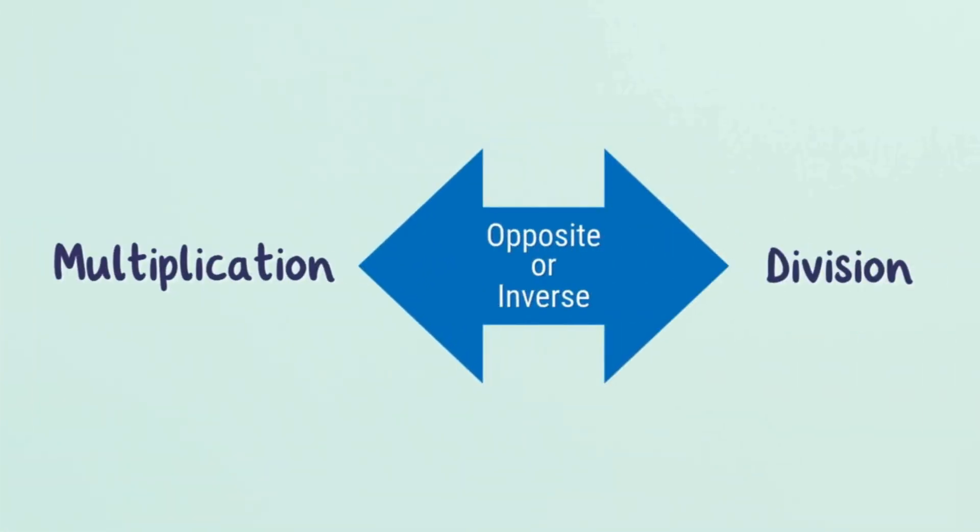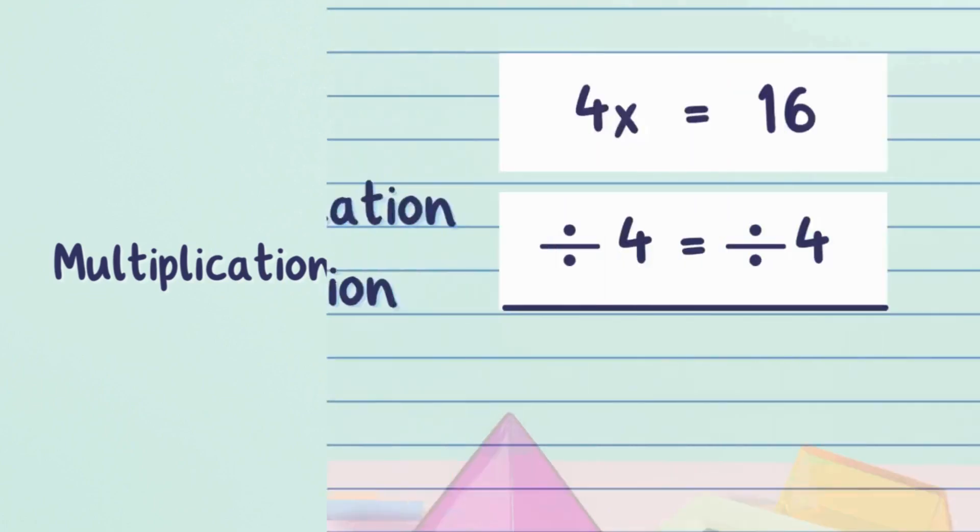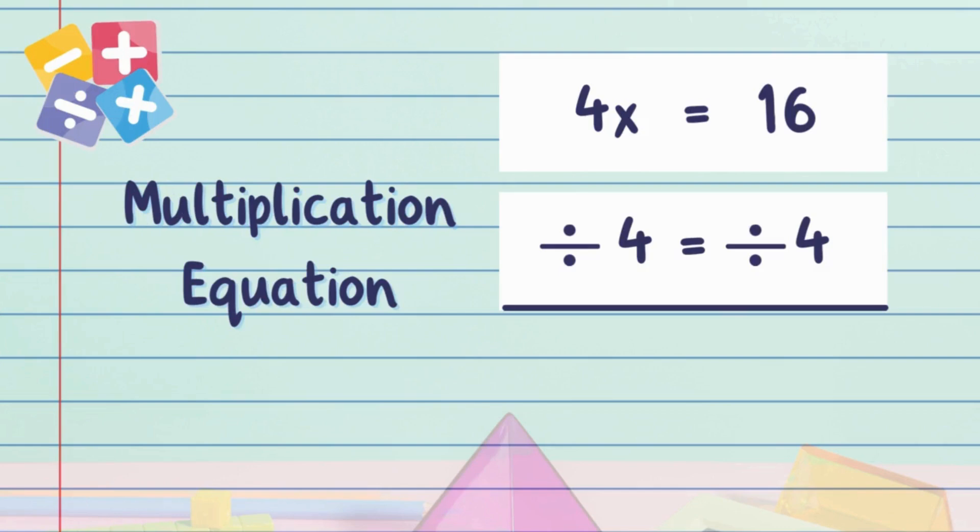So what's the opposite of multiplying by 4? You got it—the opposite of multiplying by 4 is dividing by 4. So let's divide both sides of the equation by 4. After dividing, we get x = 4. You're nailing this!